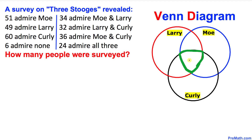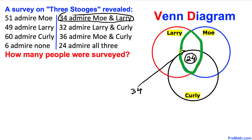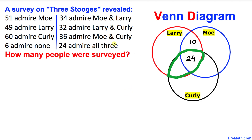Let's start from inside out. 24 admire all three of them, so that number 24 goes in the center region common to all three circles. Now let's focus on the 34 that admire Mo and Larry. Since 24 are already in that region, we add 10 more, so 10 plus 24 equals 34.